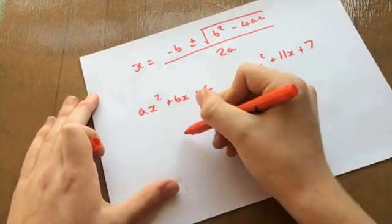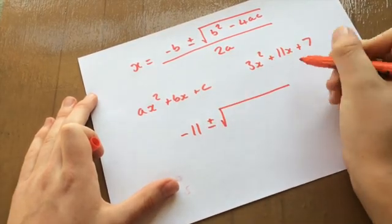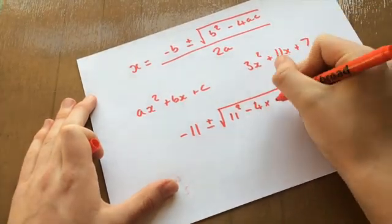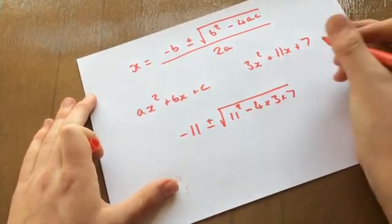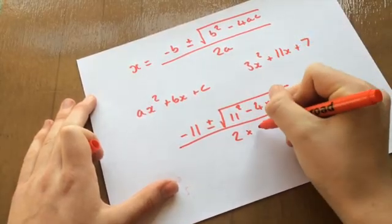So minus b, so minus 11 plus minus the root of b squared, so 11 squared, minus 4 times a, which is 3, times 7. And then we put all of this over 2 times a, which is 3 again.